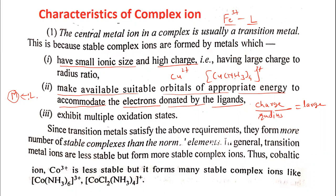The bond between the metal and the ligand is formed because one donates the electron pair and the other accepts it. This characteristic is satisfied by transition metal ions. They have small ionic size compared to other metal ions and show variable oxidation states, which is why they carry high charge, giving a large charge-to-radius ratio. The third condition is that they exhibit multiple oxidation states — from +1 to +7.